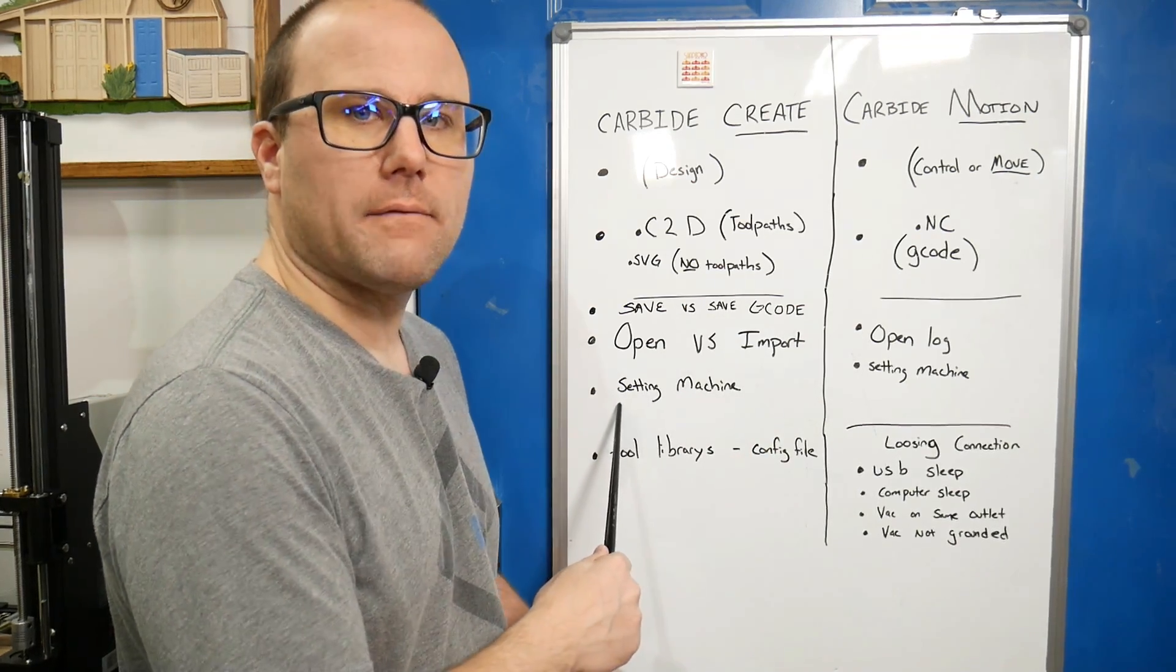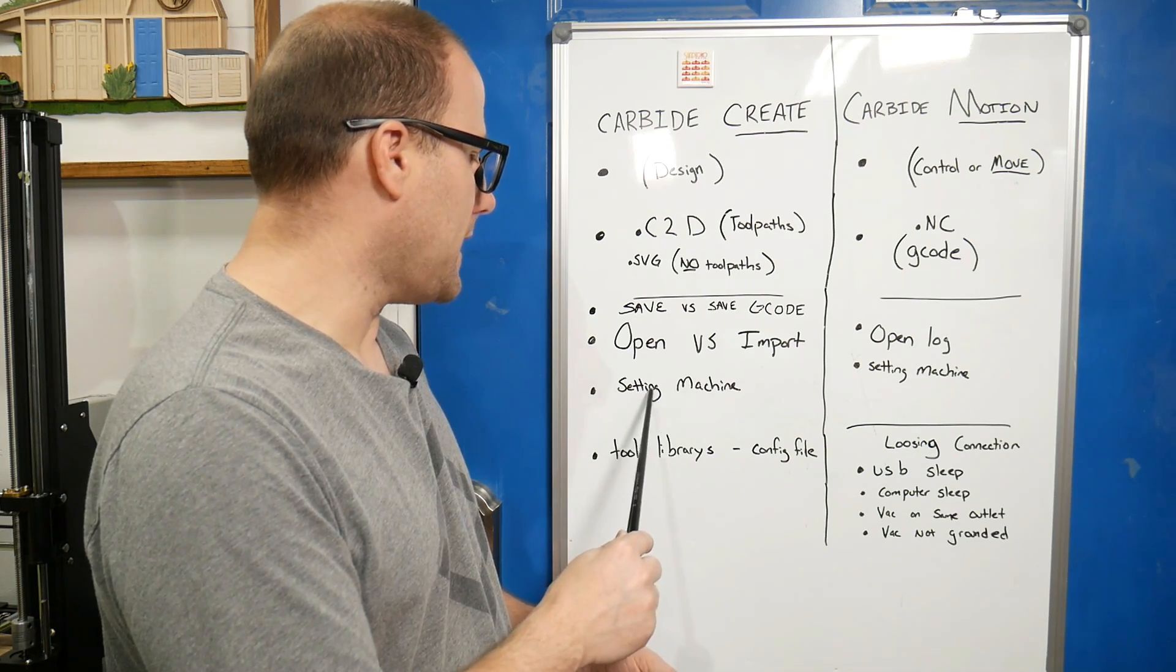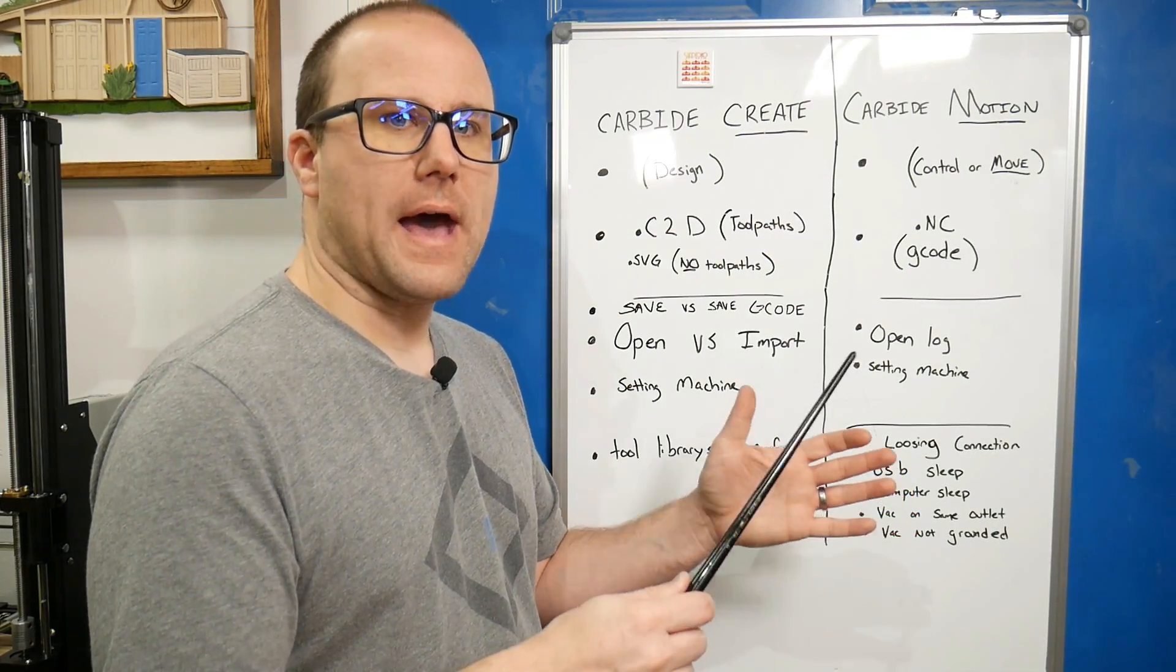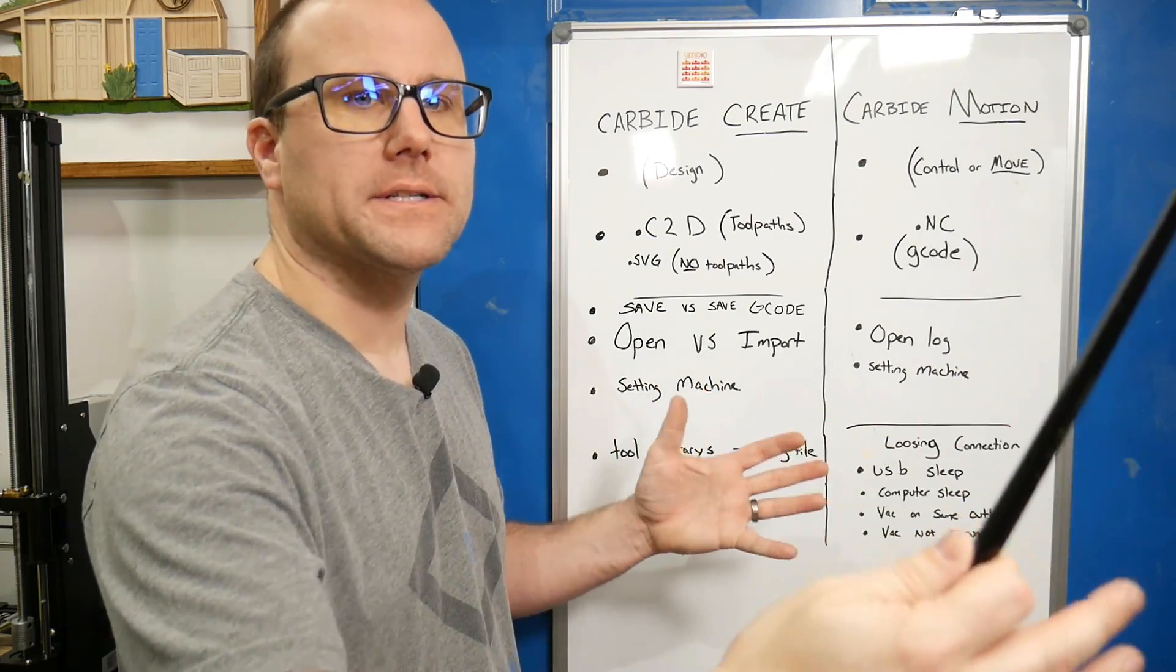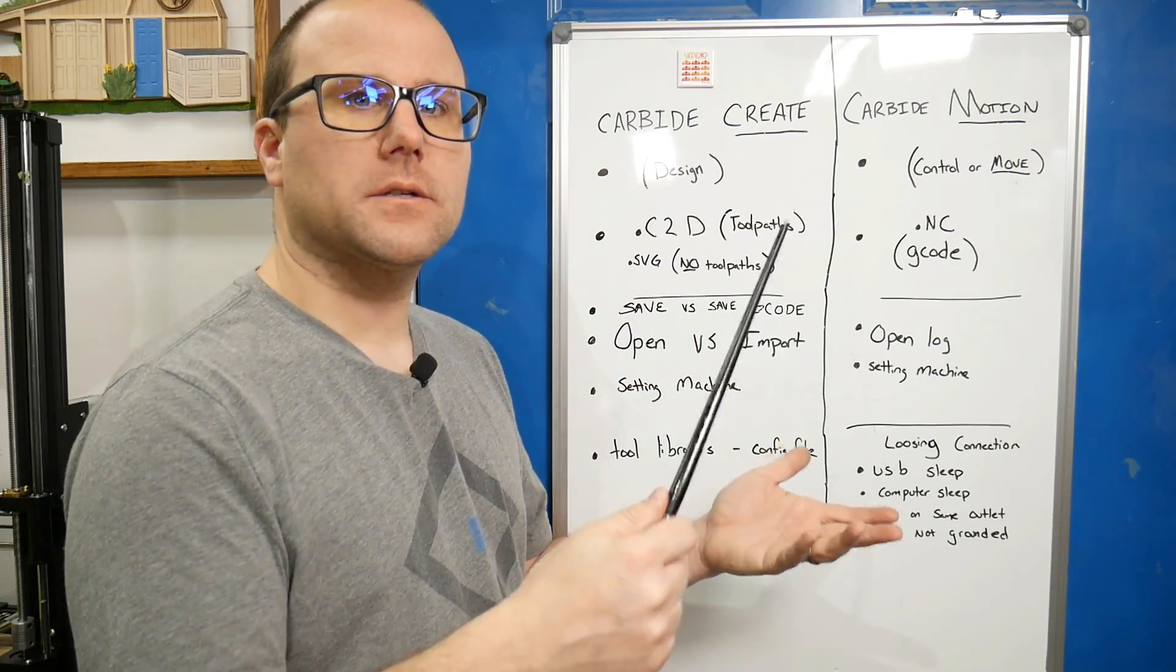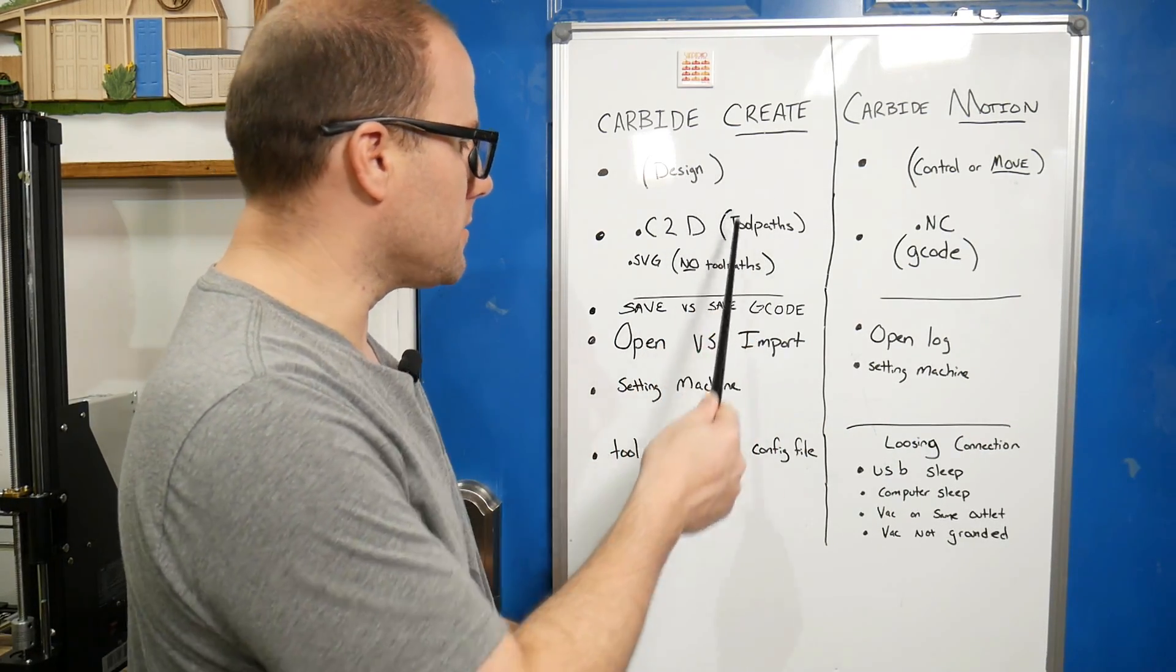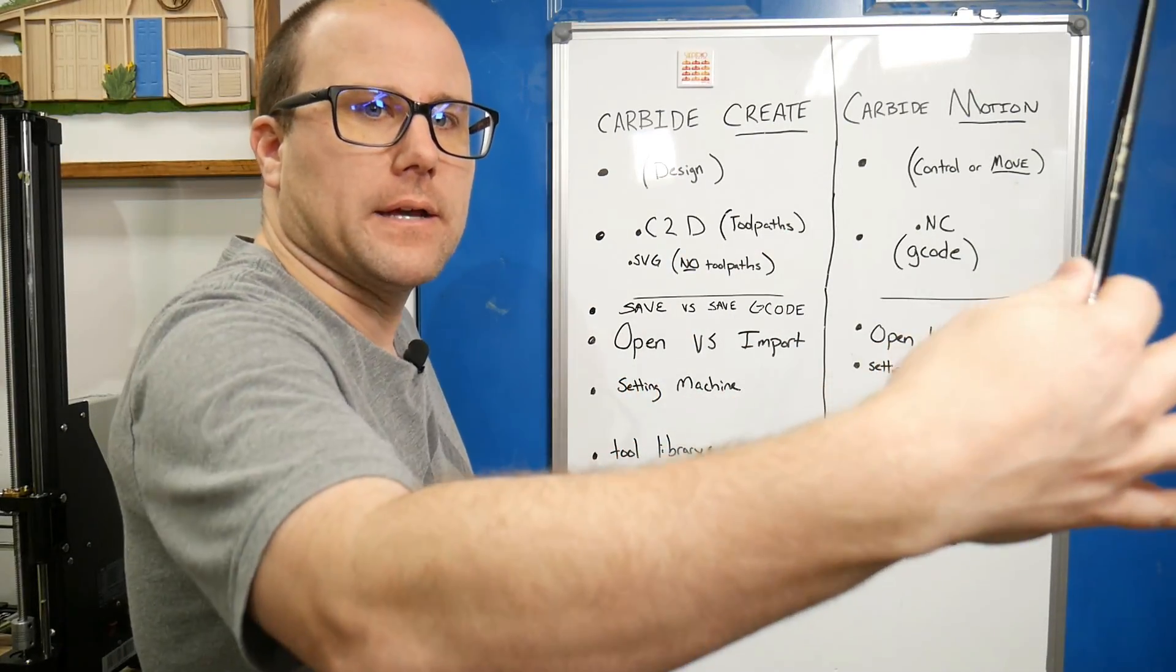On the bottom of our settings page in Carbide Create, we're setting the machine. You'll have a dropdown selecting Nomad, Shapeoko 3, XL, and XXL. That tells Carbide Create how big your waste board is. If you don't have a Shapeoko, just use the XXL. That's the biggest we can go. It gives the design file how big you can make your design.